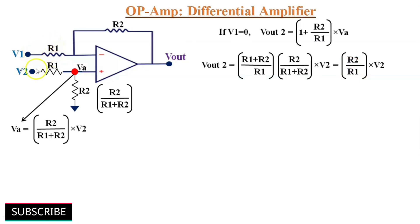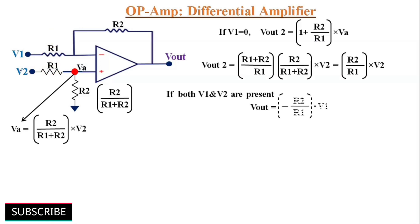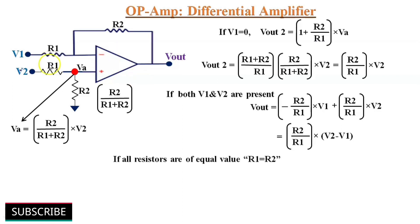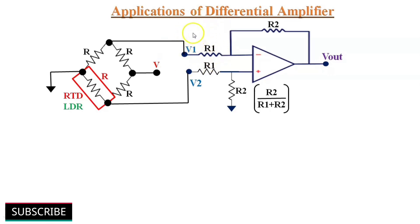Now considering both V1 and V2 acting simultaneously, Vout = −(R2/R1) × V1 + (R2/R1) × V2, which simplifies to (R2/R1) × (V2 − V1). So if all resistors in this differential amplifier circuit are equal in value, that is R1 = R2, then this circuit becomes a unity gain differential amplifier, and the output expression becomes Vout = V2 − V1.